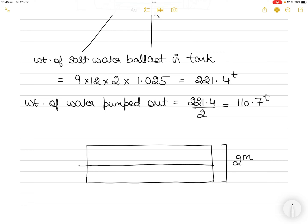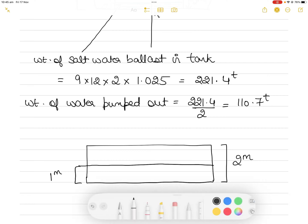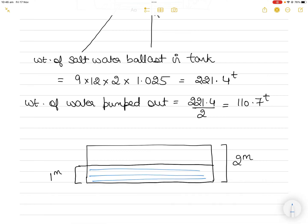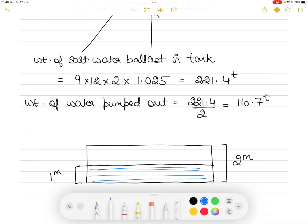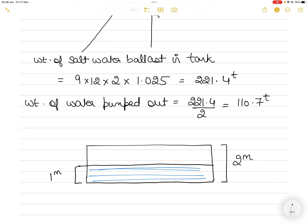You pumped out the top half of the tank — that 1-meter layer. Think of that removed liquid as a discharged cargo. The center of gravity of that discharged cargo is at the center of its height: 0.5 meters within that 1-meter layer. So the center of gravity of the pumped-out water sits 0.5 meters above the 1-meter mark.